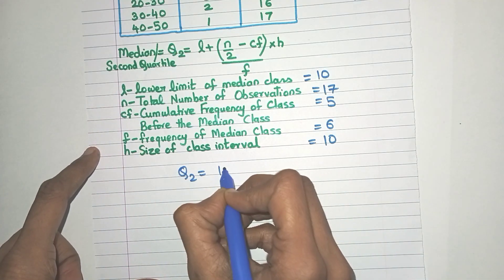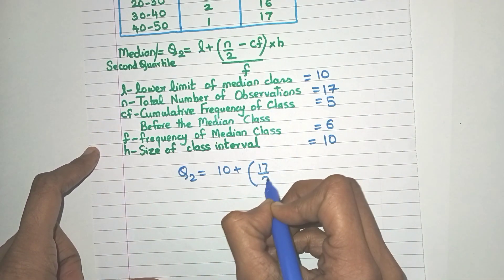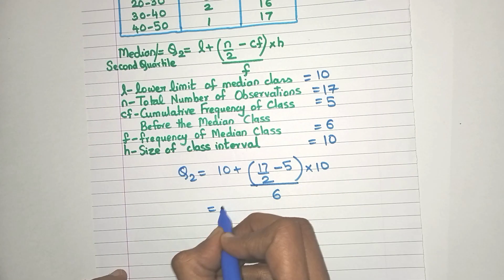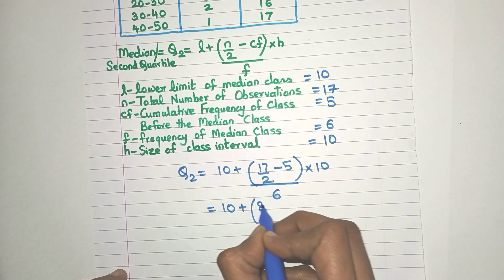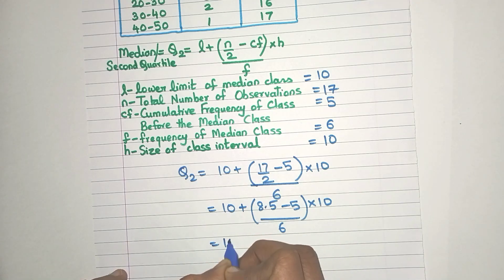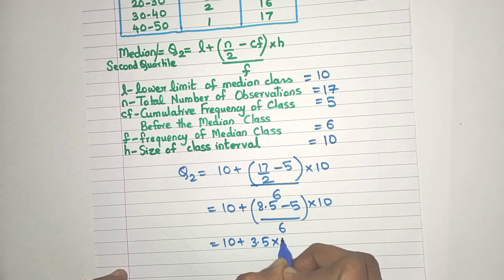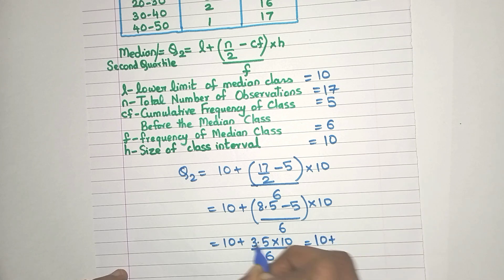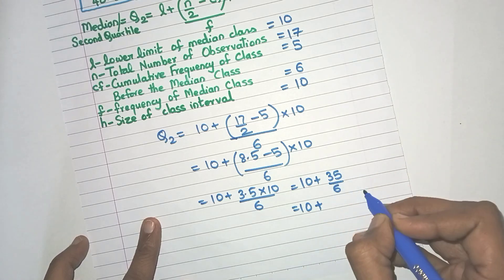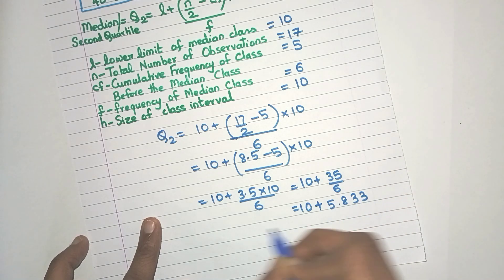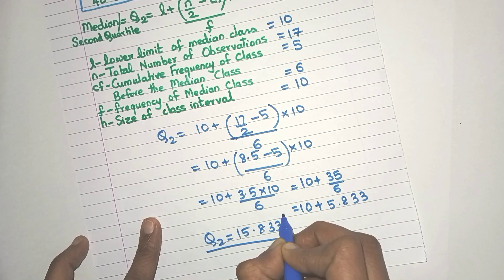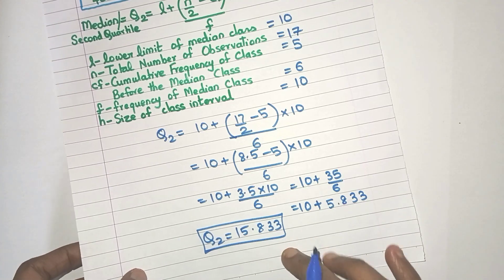Substituting: Q2 = 10 + (17/2 − 5) / 6 × 10. That gives 10 + (8.5 − 5) / 6 × 10 = 10 + 3.5 × 10 / 6 = 10 + 35/6. Calculating 35/6 gives 5.833. So Q2 = 10 + 5.833 = 15.833. This is the second quartile, or median value.